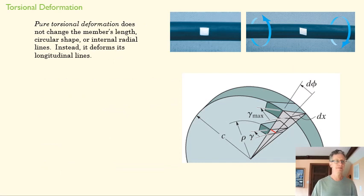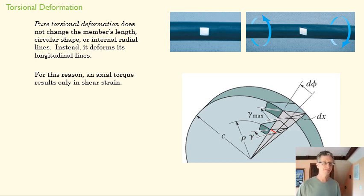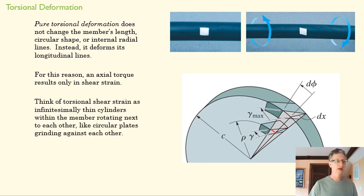Pure torsional deformation, that's only twisting, doesn't change a member's length, its shape, or its radial lines. In other words, if we looked at a cross section of this rod at any point, those radial lines still made a straight line towards the edge of the surface. But it does deform the longitudinal lines. If I drew a line along the surface of this and then twisted it, we would see that line was now at a diagonal. That axial torque results in shear strain.